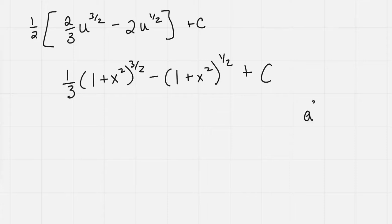So if we look at a to the 3 halves, we can look at this as a to the 1 half all cubed. And so that would be the same as square root of a times square root of a times square root of a, which is a times square root of a.